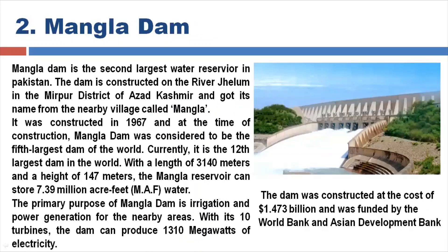The Mangla Dam is the second largest water reservoir in Pakistan. The dam is constructed on the River Jhelum, in Mirpur Azad Kashmir district. It got its name from the nearby village called Mangla.